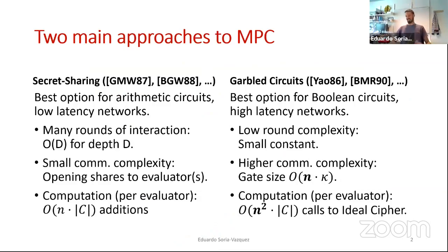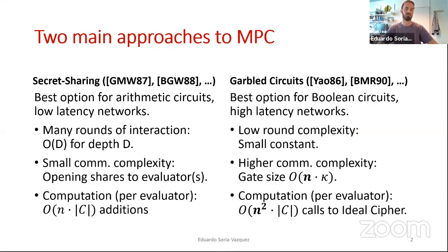Taking things slowly from the beginning: you have two main approaches for efficient MPC. You can either do secret sharing kind of protocols, or you can go for garbled circuits. These two approaches have their own advantages and disadvantages. Secret sharing protocols are very good for arithmetic circuits and low-latency networks. These protocols have many rounds of interaction depending on the multiplicative depth of the circuit.